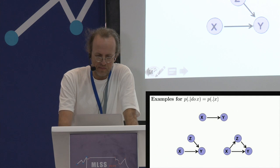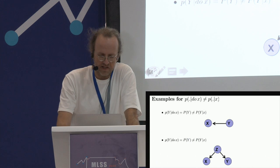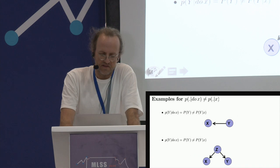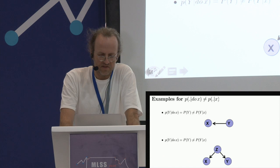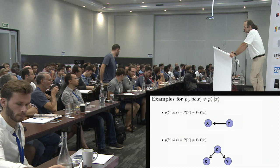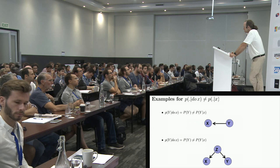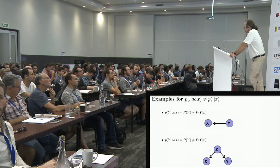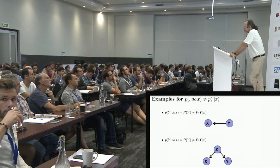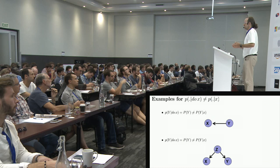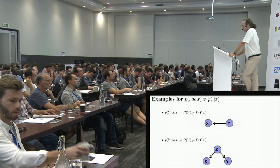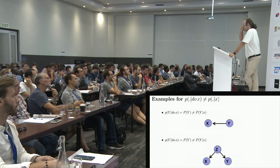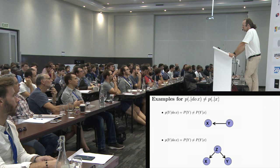Now let's look at examples where do-probability does not coincide with the conditional. Here x and y are correlated because y has a causal influence on x. If you intervene on x, what difference does this make for the distribution of y? It makes no difference, because x doesn't have a causal influence on y. Going through the formalism, the do-probability of Y given do(x) equals the marginal of y — y just doesn't care about whether you set x to some value. In a structural equation model, y is simply a function of its noise variable since it has no parents.